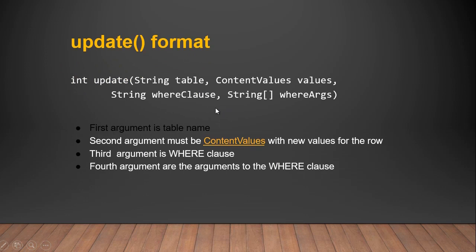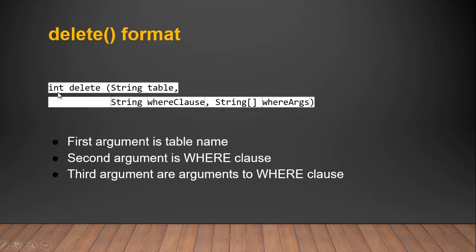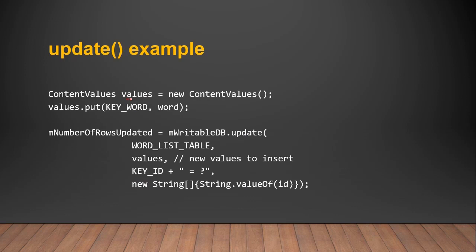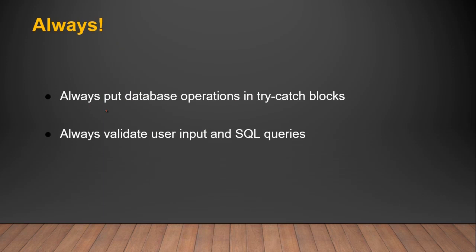The update format: if the update succeeds, it returns a value greater than zero. First argument is the table name, second is ContentValues with new values for the row, third is the WHERE clause, and fourth is the arguments to the WHERE clause — holding the ID for the WHERE clause if you use a placeholder. Create a ContentValues object, call put with column name and data, then call update passing table name, values, WHERE clause, and the ID. As a good developer, always put database operations inside a try-catch block.